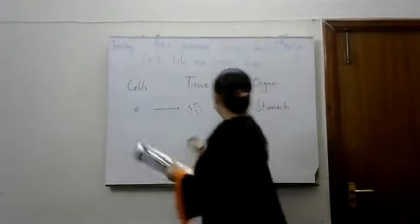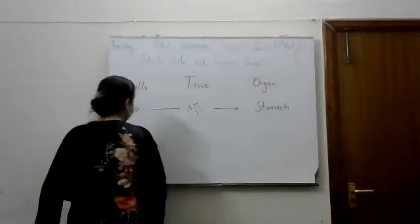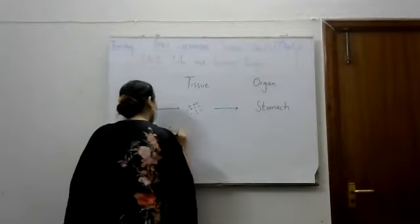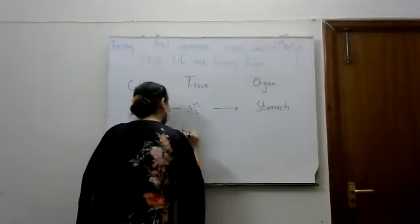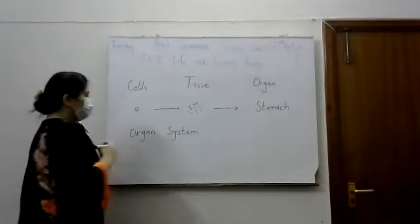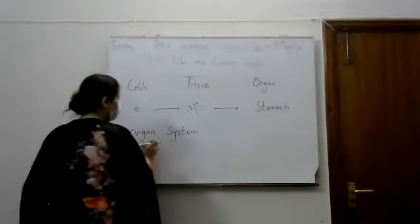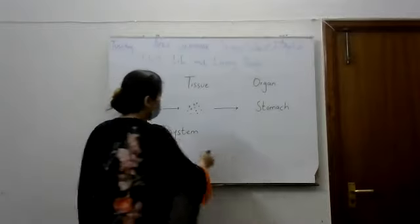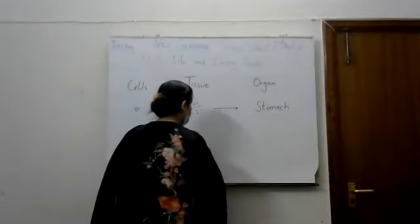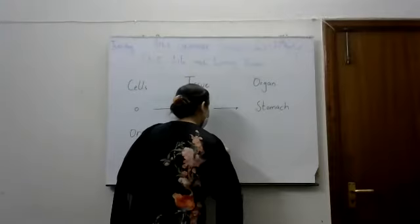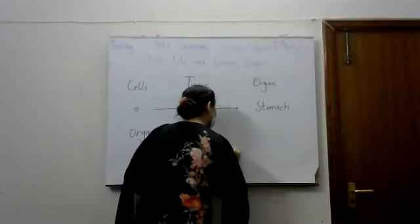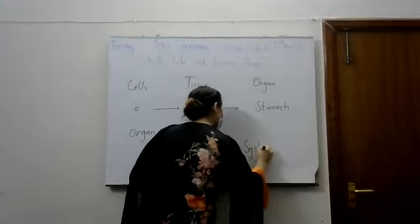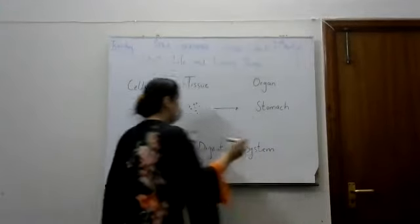And after that, when the organs are combined, the system is formed, which is called an organ system. This is the tissue system, the organ system.